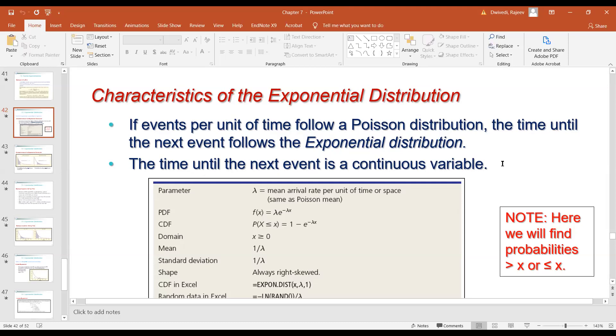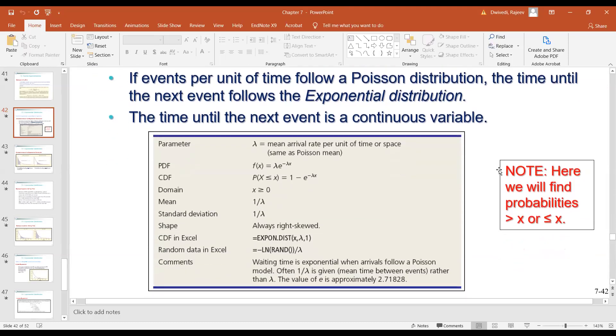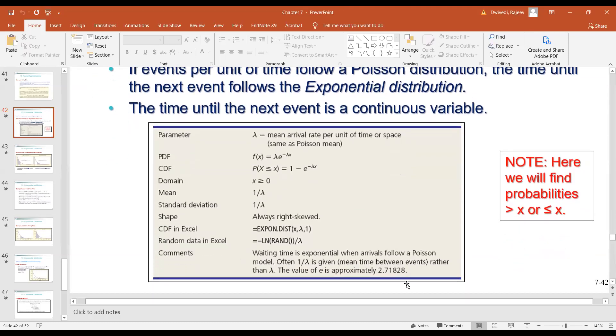Until the next time event is a continuous variable. Now look into this at the comment section at the bottom. Waiting time is exponential when arrivals follow a Poisson model. Often, one by lambda is given mean time between events rather than lambda. The value of e is this.